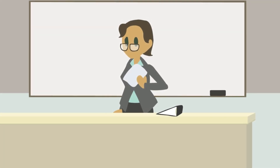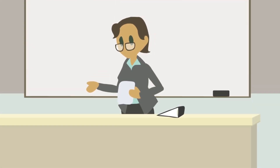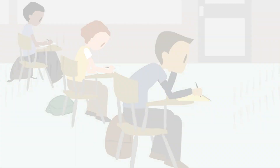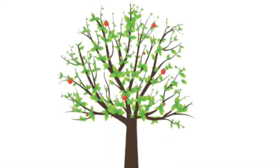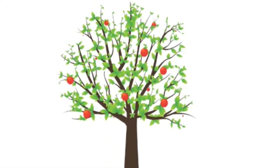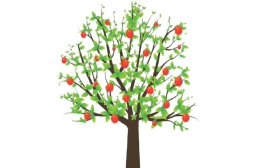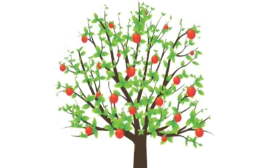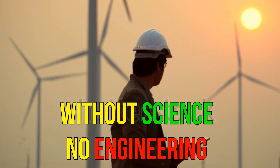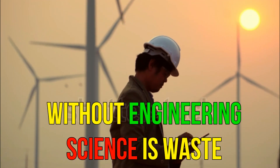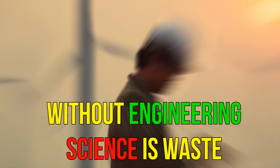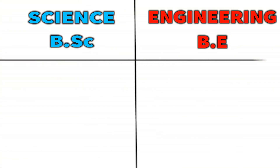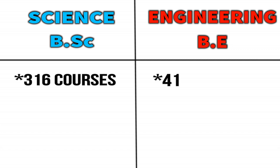Engineering courses are science branches — that's what we say about science courses. The key distinction is that science is not the same as engineering. In India, there are 316 science courses and 416 engineering courses available.